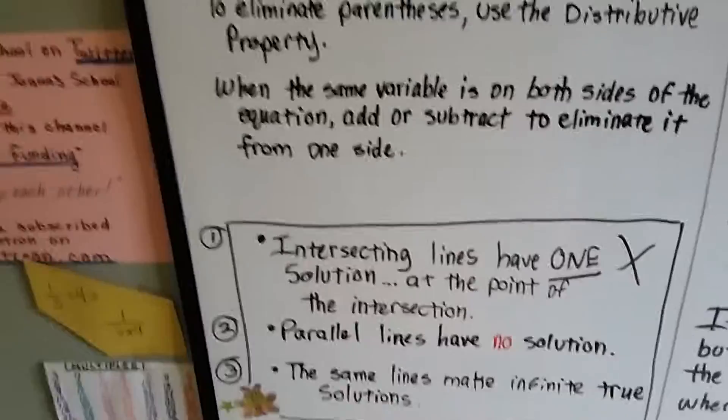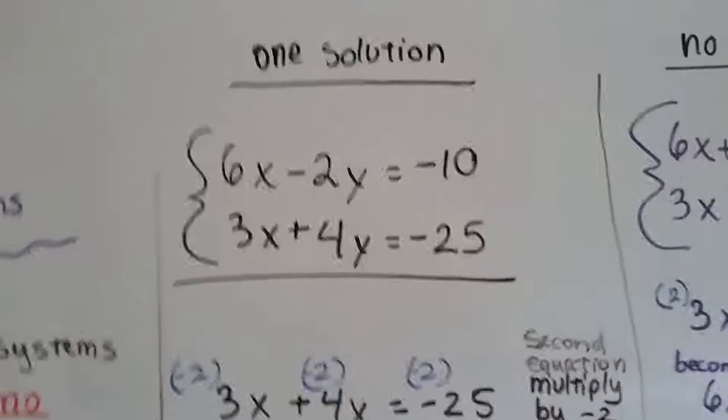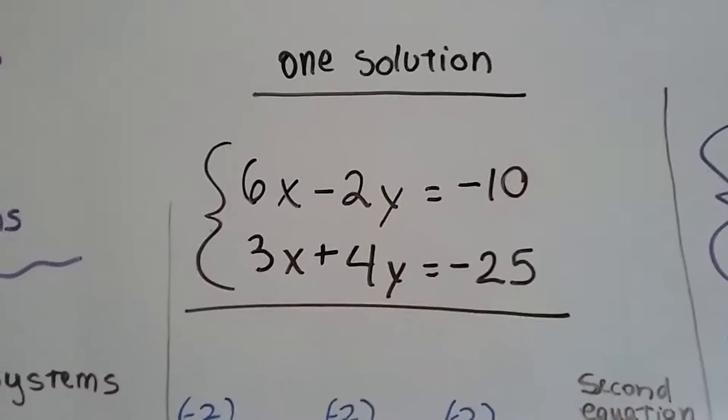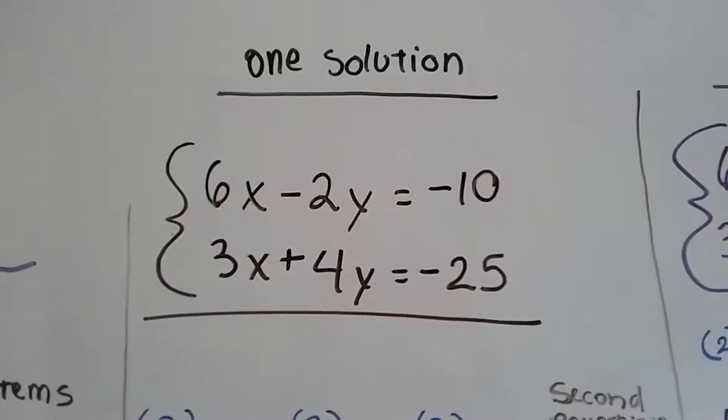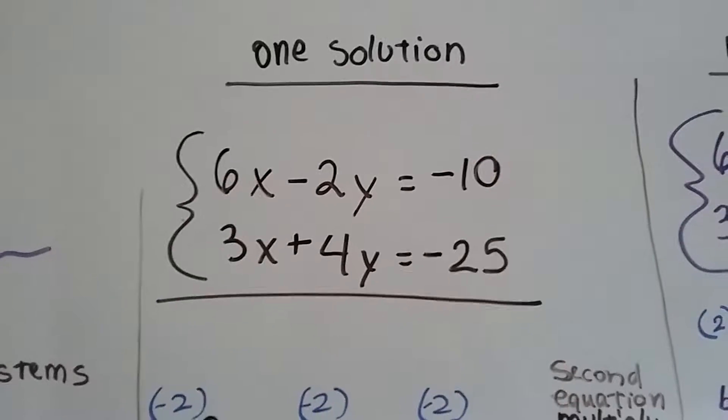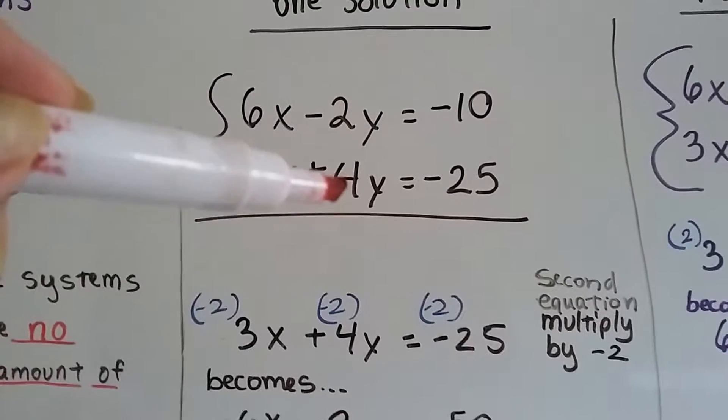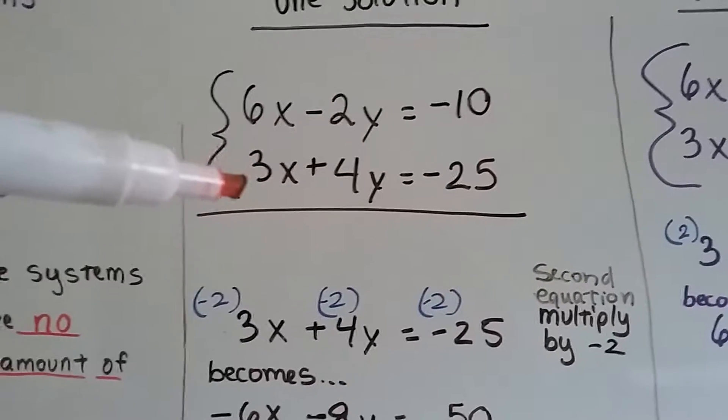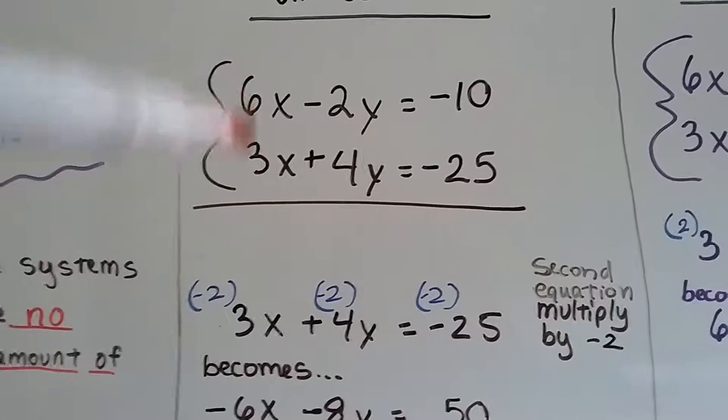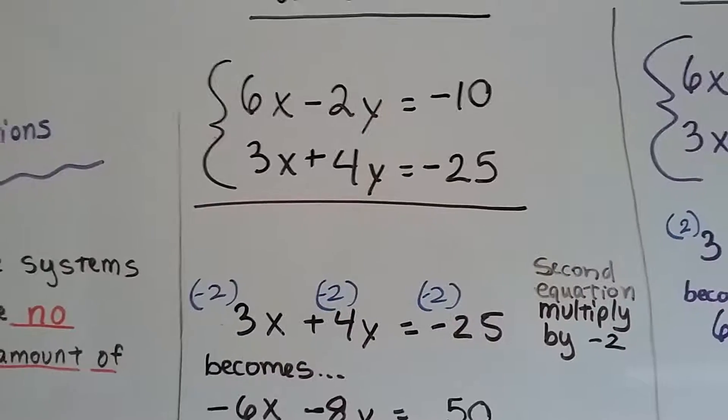Here's our recap solving for one solution algebraically. This is our system of equations. The first thing we notice is there's a 2 and a 4, and there's a 6 and a 3, so we can multiply one by negative 2 to make it match the other.